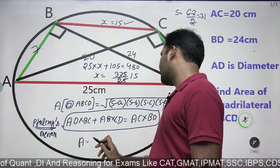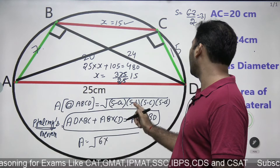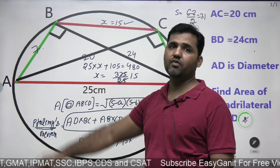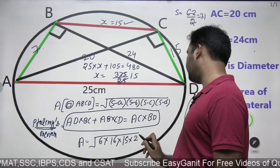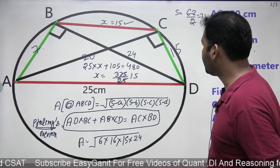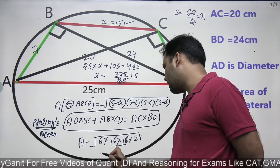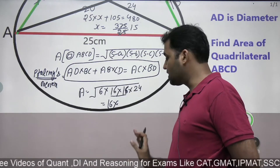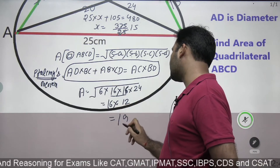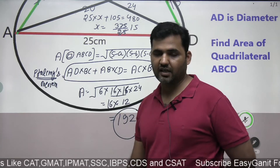Now applying Brahmagupta's formula: Area = √[(S−A)(S−B)(S−C)(S−D)] = √[(31−25)(31−15)(31−15)(31−7)] = √[6 × 16 × 16 × 24]. Taking values outside the square root: 16 × 16 gives 16 outside, and 6 × 24 = 144 gives 12 outside. So the area = 16 × 12 = 192 cm². That is the area of the cyclic quadrilateral.